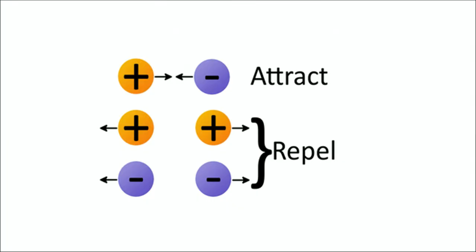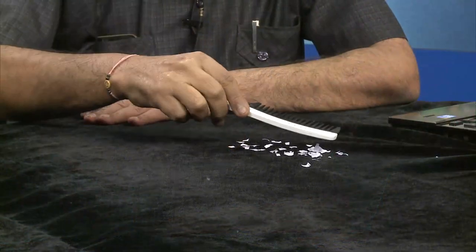In this figure, one charge is positive and another charge is negative, so they will attract each other. In the second portion, two positive charges repel each other, and similarly two negative charges also repel each other because they are like charges. To demonstrate this, I am rubbing a comb with my hair and bringing it near bits of paper — you can see the paper bits are being attracted by the charged comb. This is charging by induction.